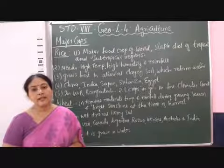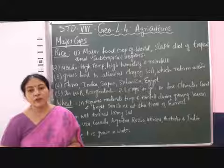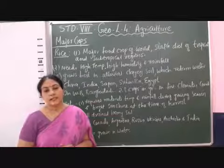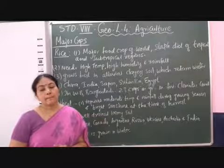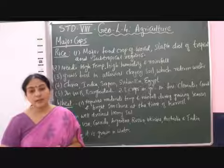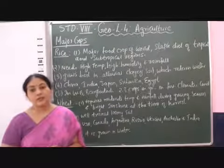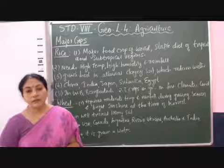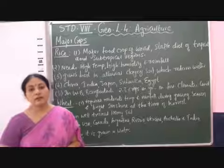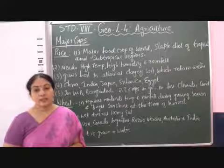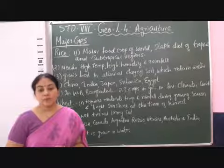More than 100 centimeters of rainfall is required for the growth of rice. The temperature required is also high — it requires more than 25 degrees of temperature. High humidity is also required by rice to grow.